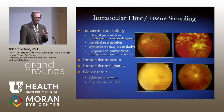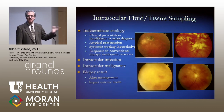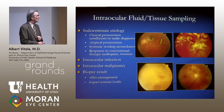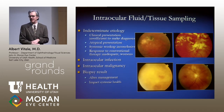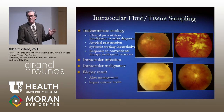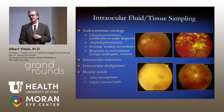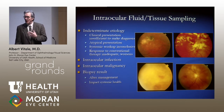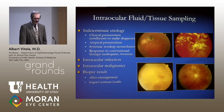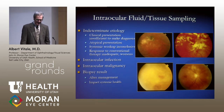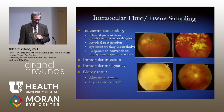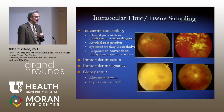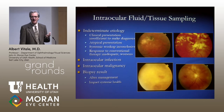Intraocular fluid and tissue sampling is very important, particularly in presentations where it is difficult to make the diagnosis based on pattern recognition alone. In uveitis where the etiology is unclear, the response to therapy is atypical, or the systemic workup is inconclusive, intraocular fluid analysis from the anterior chamber, vitreous, retina, or choroid can be helpful in distinguishing intraocular infection from malignancy — a distinction that is critical for treatment and may impact systemic health.